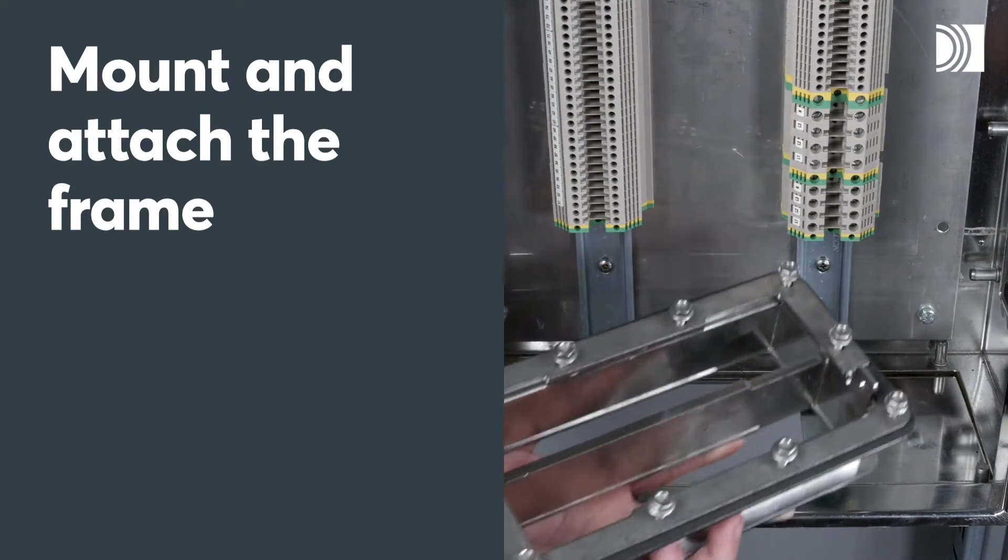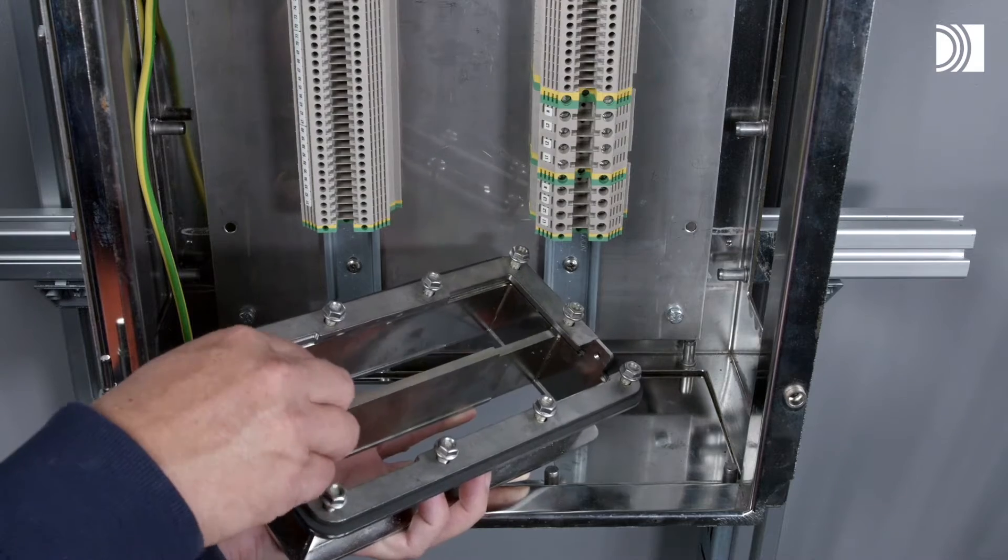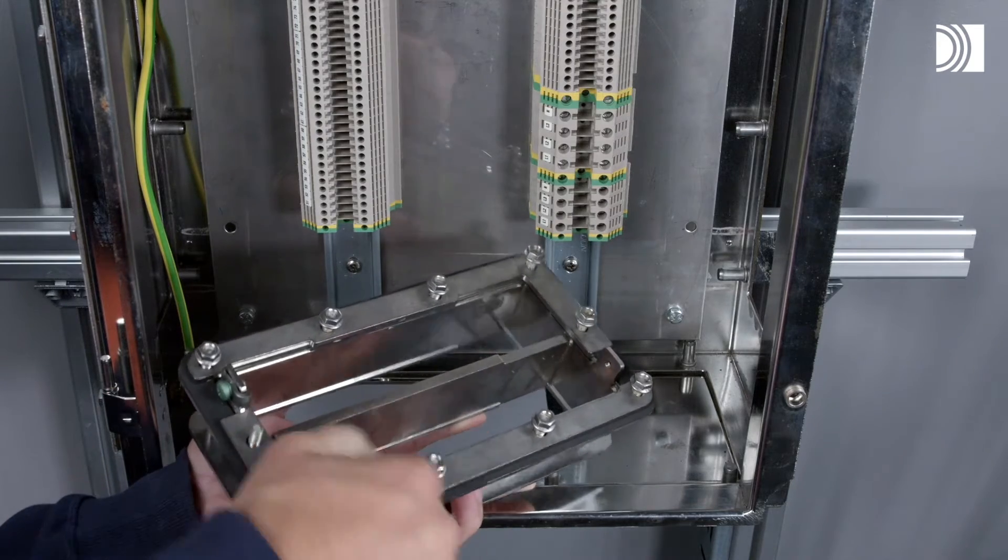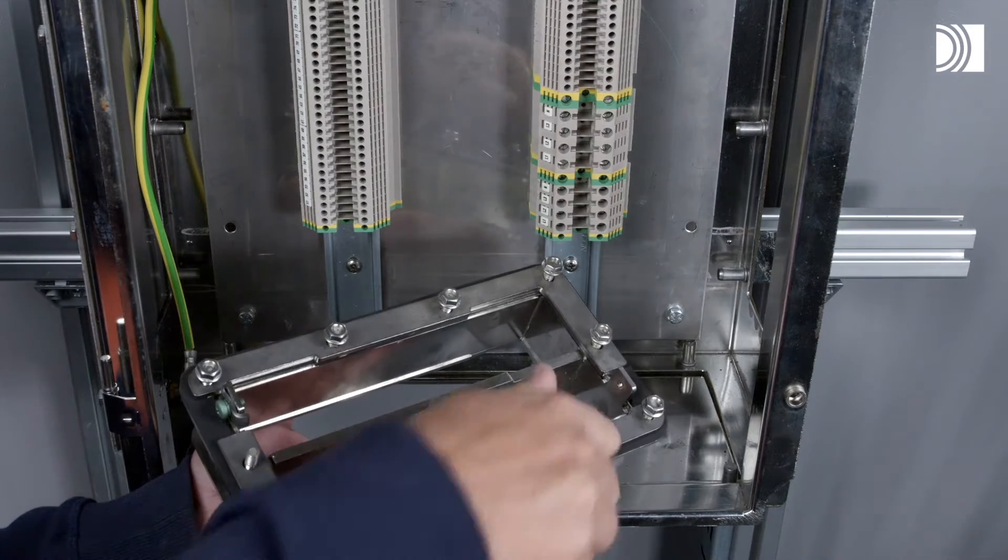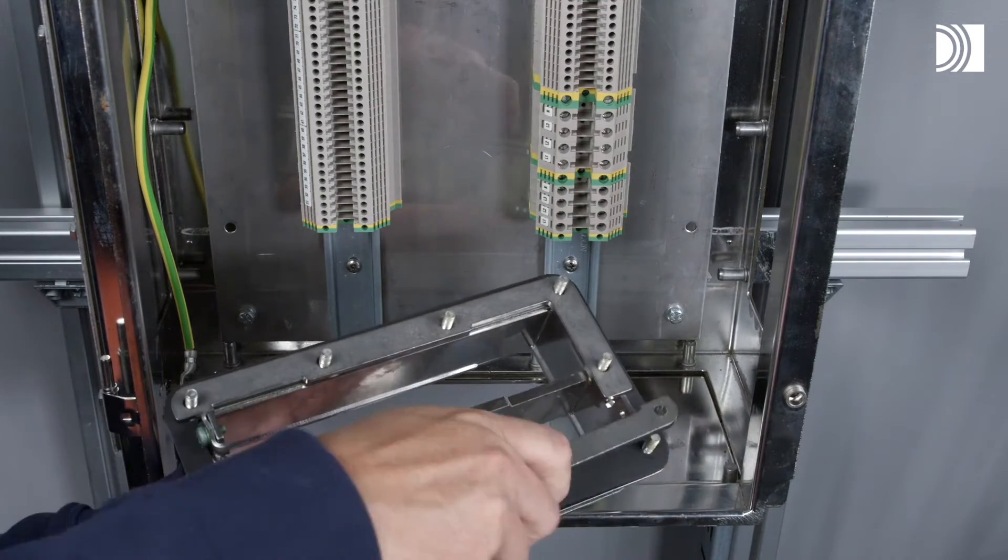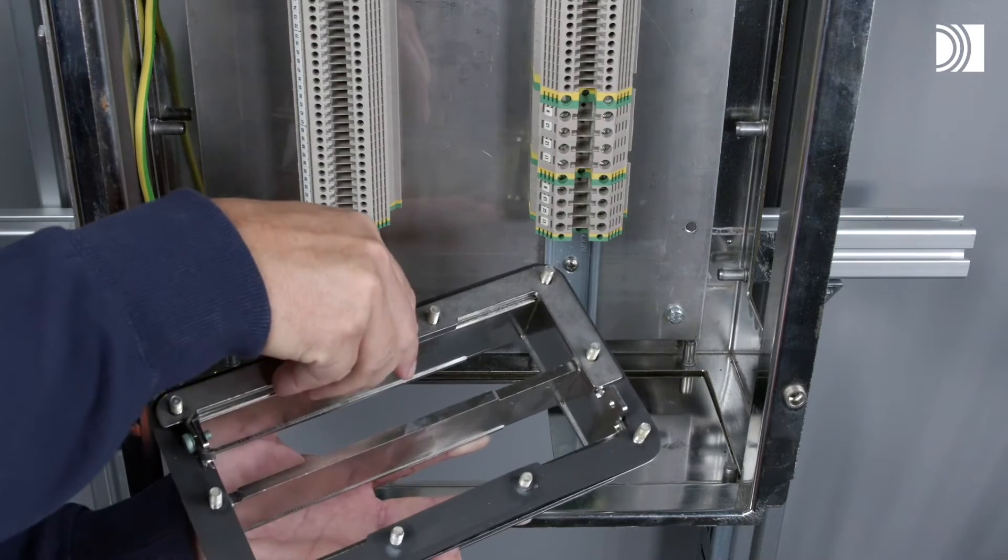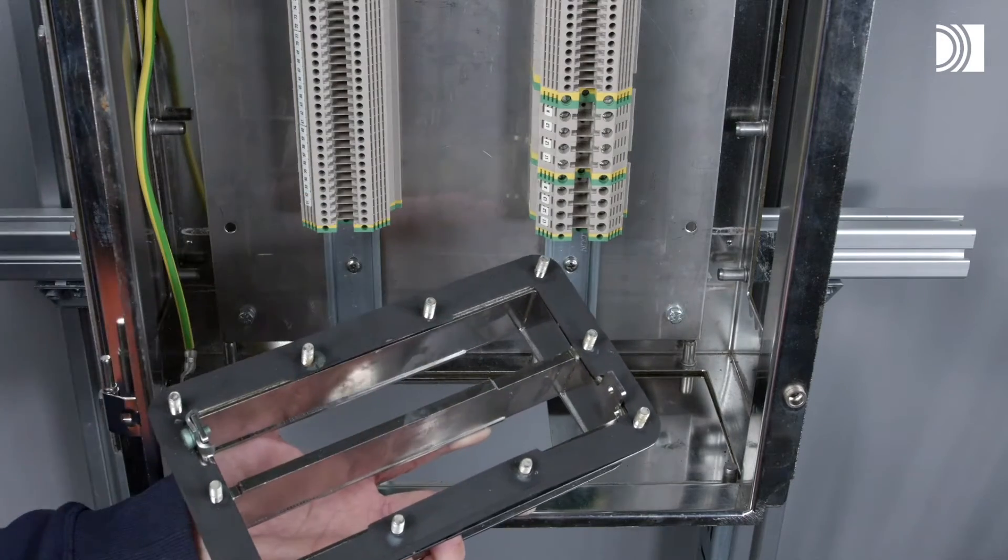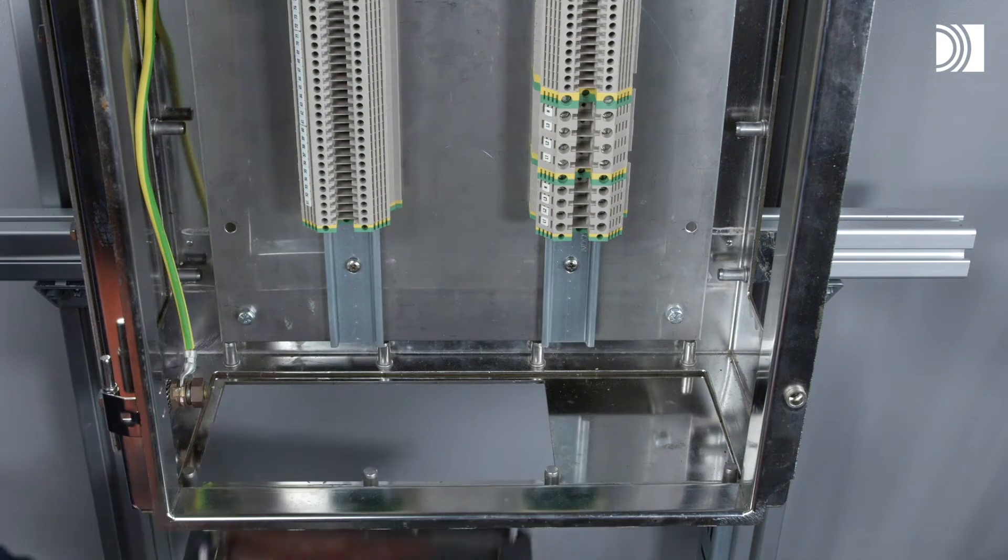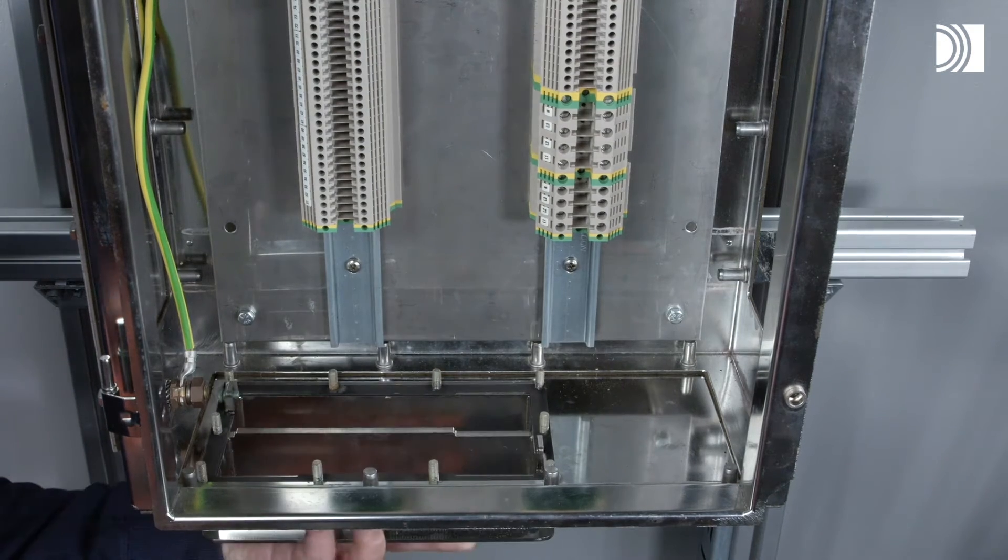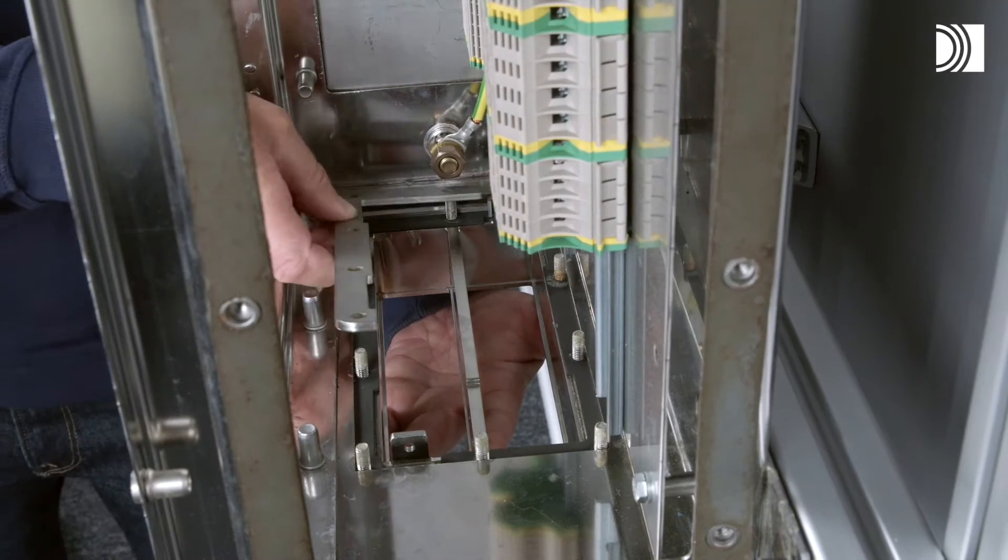Mount and attach the frame. Remove all nuts and the two counter frame parts. Insert the frame from the outside of the cabinet. Make sure the gasket is placed between the frame and the cabinet.